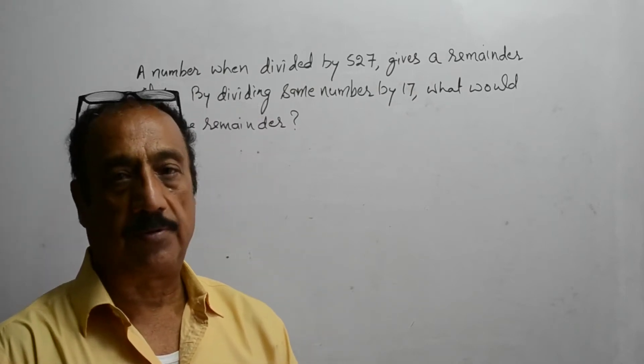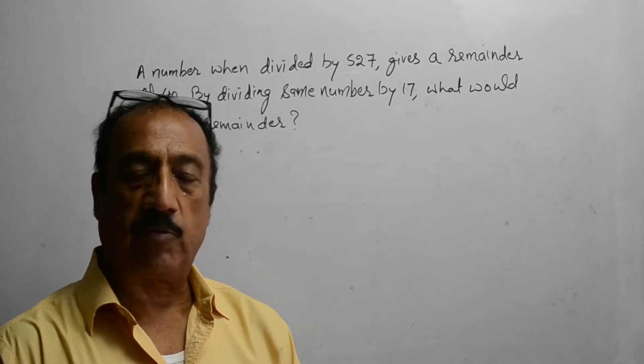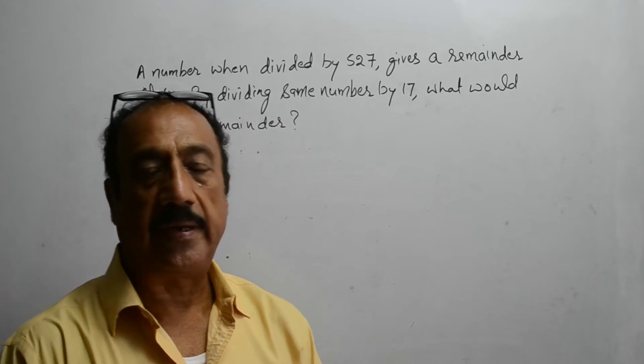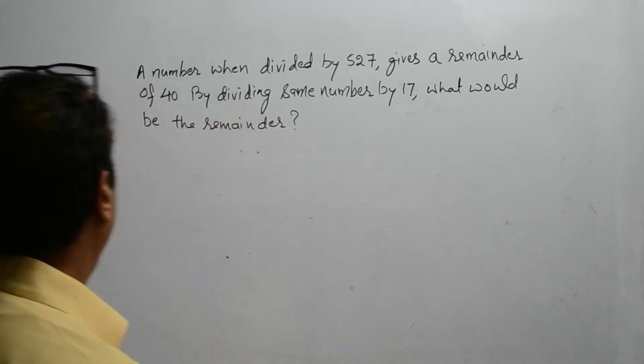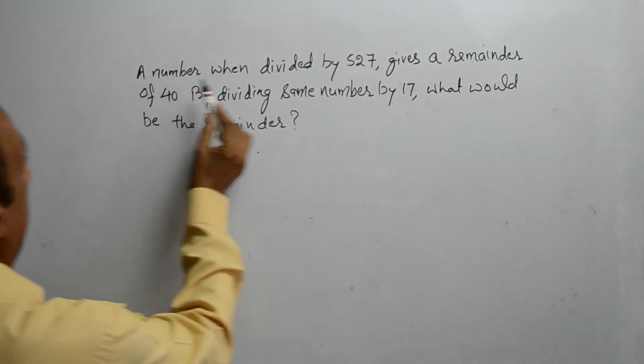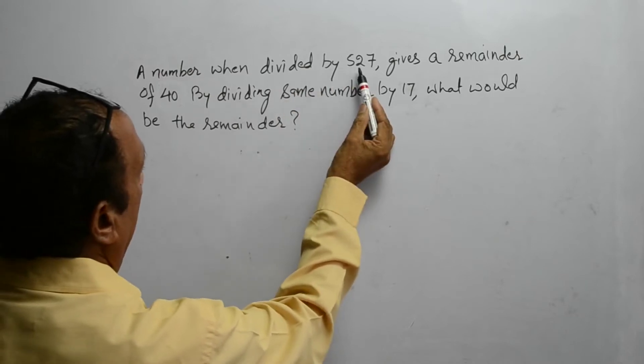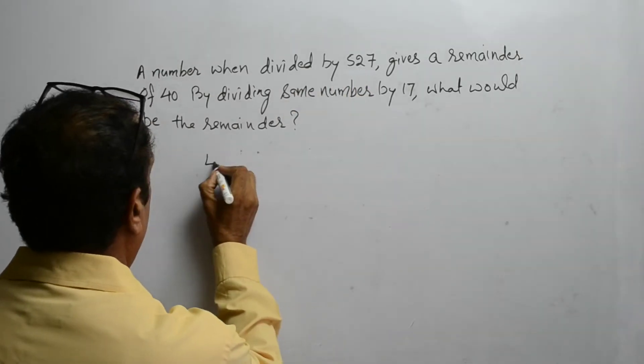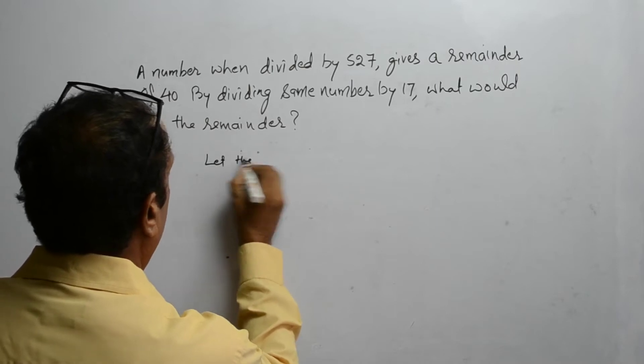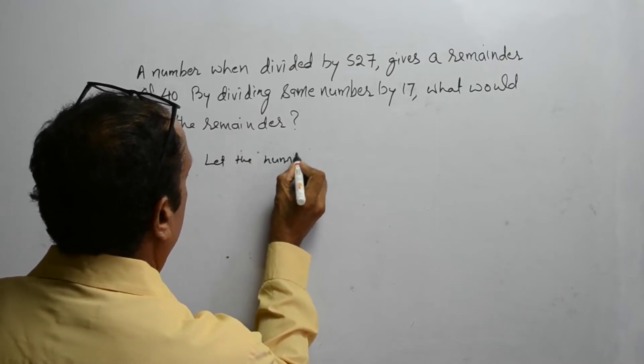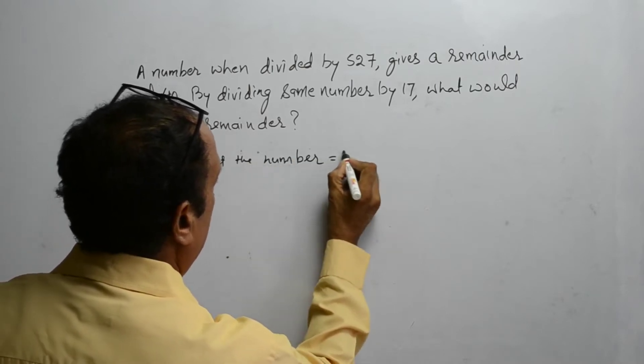We are going to solve a question which is frequently there in competitive exams. The question is: a number when divided by 527, let the number be x.